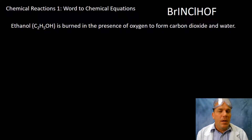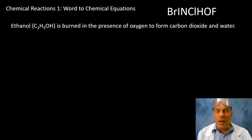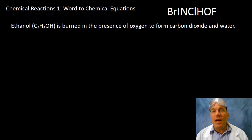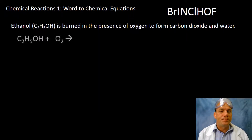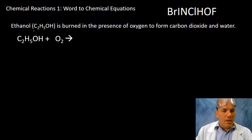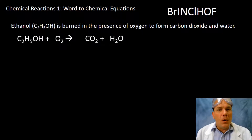Let's look at our first example. We have ethanol — you're given the formula for ethanol and you're not expected to know the nomenclature, but you'll pick up on organic nomenclature throughout the course. Ethanol is burned in the presence of oxygen to form carbon dioxide and water. As a formula: we have ethanol, then oxygen placed in a diatomic state. The arrow here means 'yields,' 'produces,' or 'forms.' Products are carbon dioxide and water.